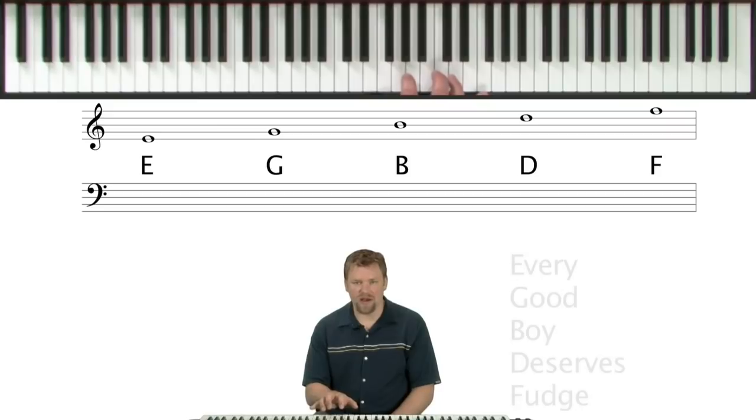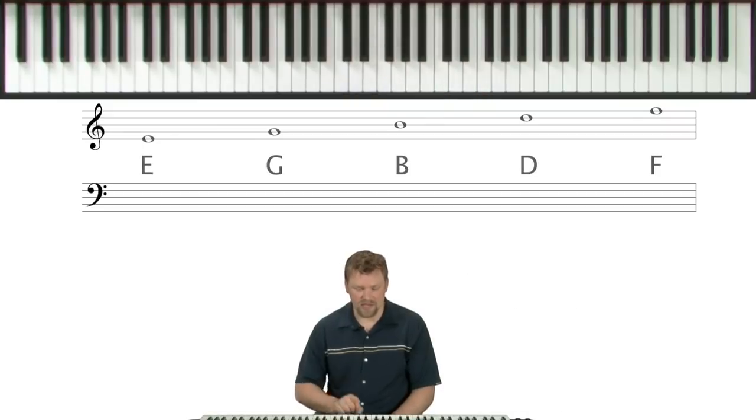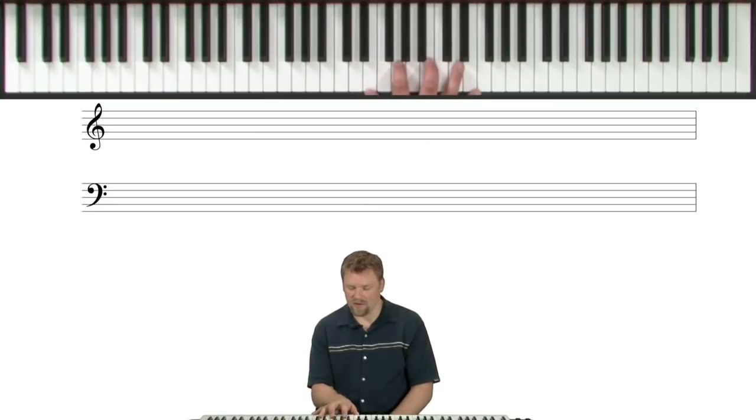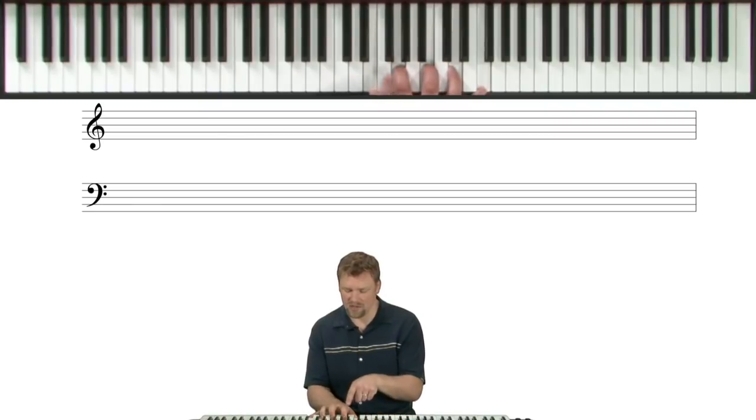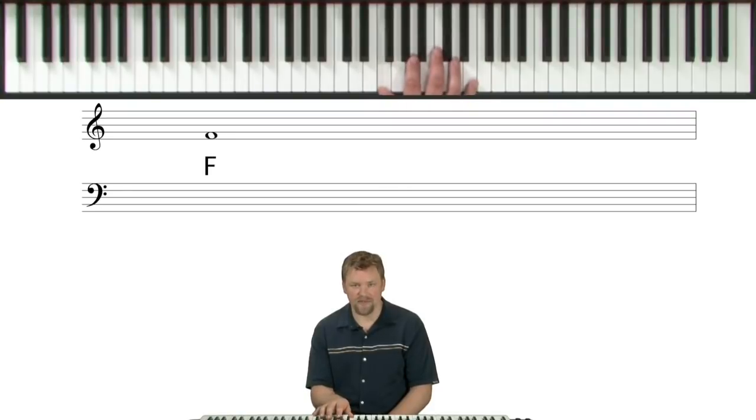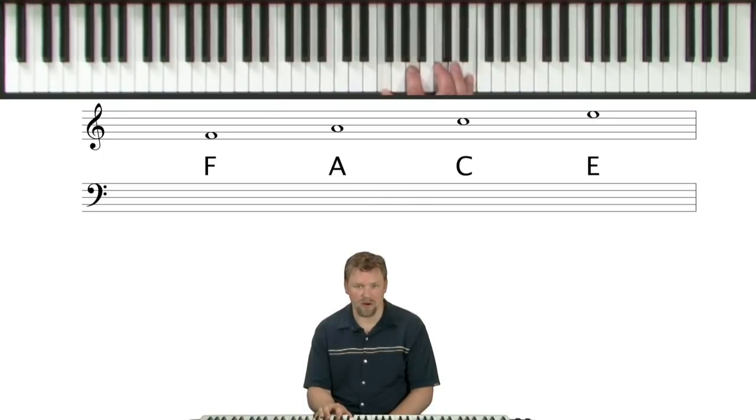So, that's the notes that we find written on the lines in the staff. Now, the spaces in between that, we find, well, if we can look there on the piano, we see. So, the spaces in between are the notes in between those ones right there. So, F is the first space. Go up, A, then C, then E. So, it spells the word face. F, A, C, E.